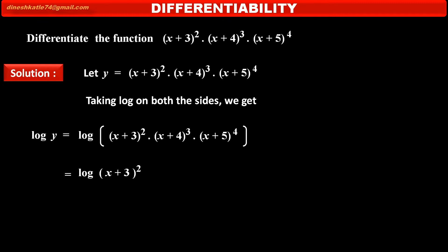log of (x+3)² plus log of (x+4)³ plus log of (x+5)⁴. By using law of exponent of logarithm for each term, we get 2 log(x+3), where 2 is the index, plus 3 log(x+4), plus 4 log(x+5), where 4 is the index.